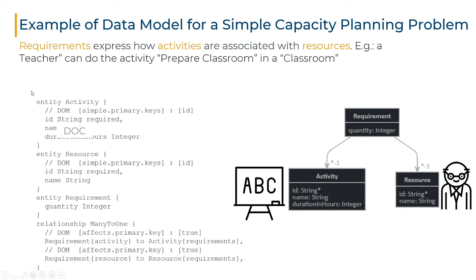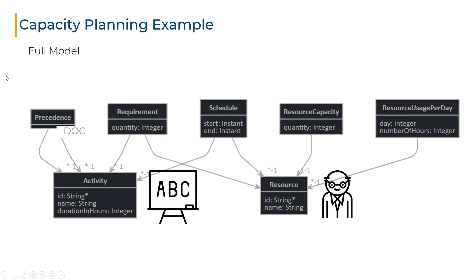We have seen the link between activities and precedences. Now let's see how we describe the relationship between activities and resources. Each activity requires a certain amount of resources to be performed. We will use a new entity called requirement to represent this information. The requirement has three attributes: the resource quantity required, the activity that requires that quantity, and the resource that is required. Because we have declared a relationship, we also have new attributes for the resource and activity entities. Each resource has a requirements attribute containing the list of requirements attached to that resource, and each activity has a requirements attribute that is a list of requirements attached to that activity. We have seen the description of the main entities: the activity, the resource, the requirement, the precedences, and resource capacity.